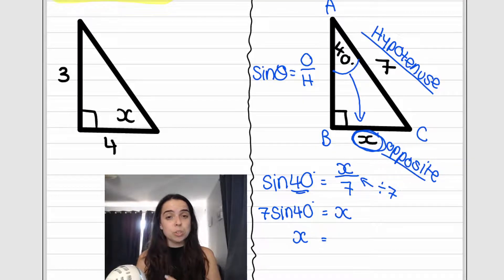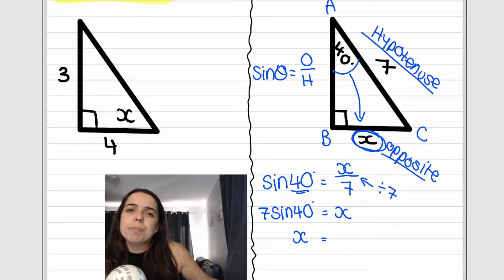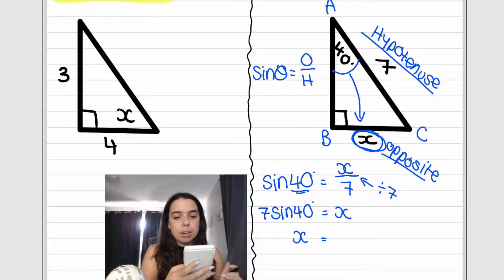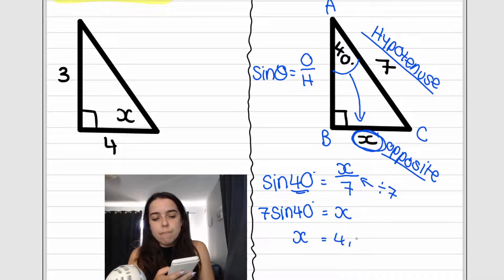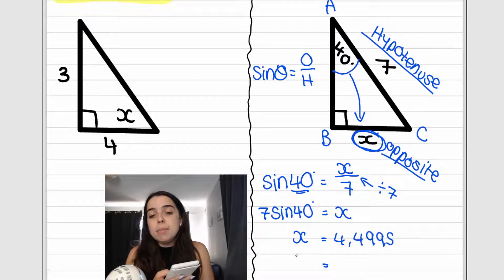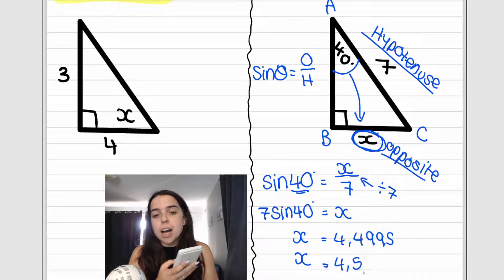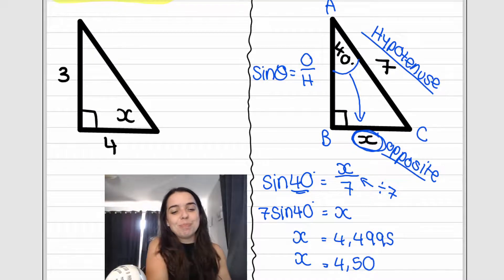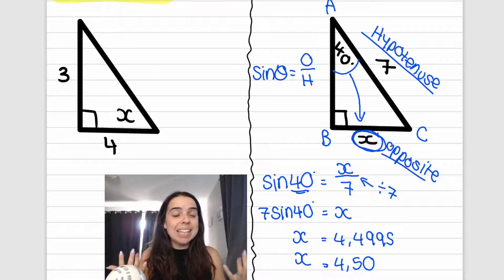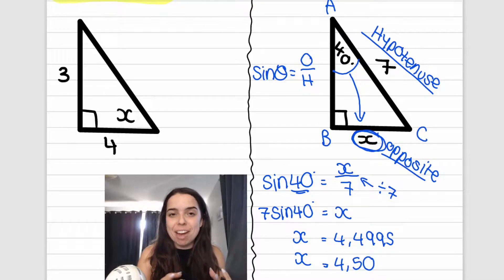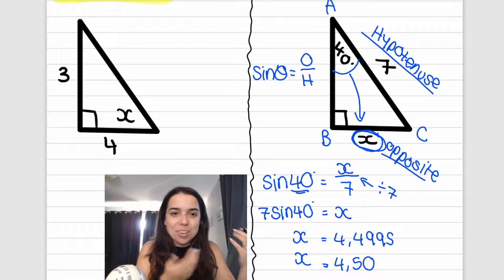Therefore x equals — grab your calculator and type in 7 sin 40, just like that, and press equals. I get 4.4995. We generally round off to two decimal places, so x is 4.50 units. This is how you find the missing length of a side in a right-angled triangle without using Pythagoras — when Pythagoras is not available, we use one of our trig ratios.